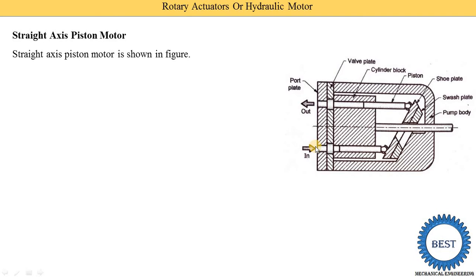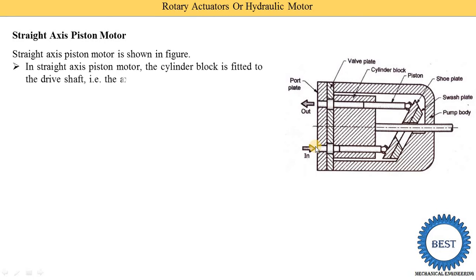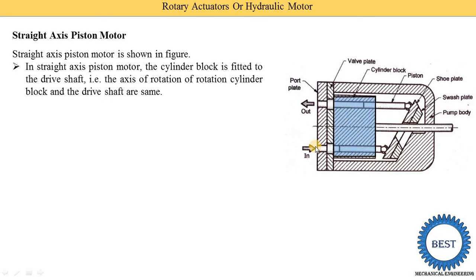Just the input and output is changed. In a pump we supply the mechanical energy as input, while in a motor we achieve the mechanical energy as output. In a straight axis piston motor the cylinder block is fitted to the driver shaft. Here you can see this is the cylinder block.